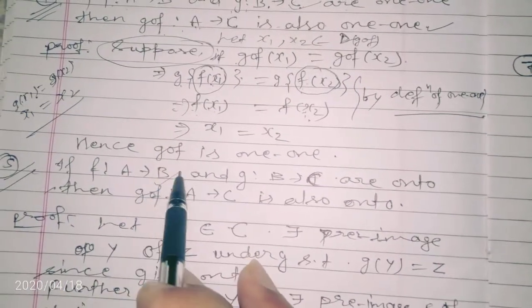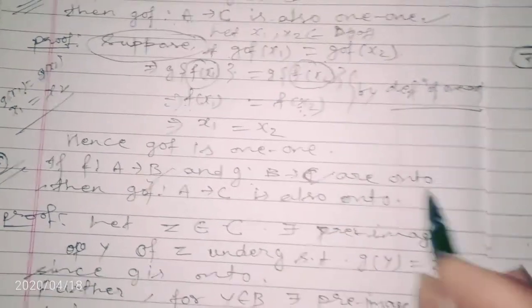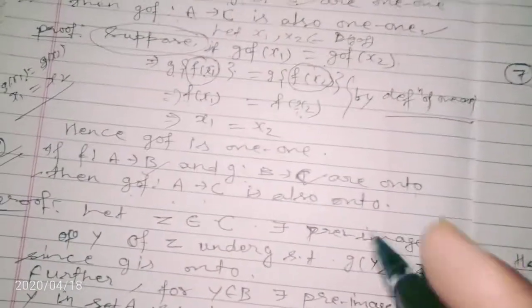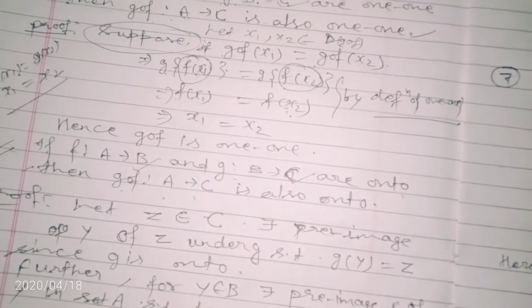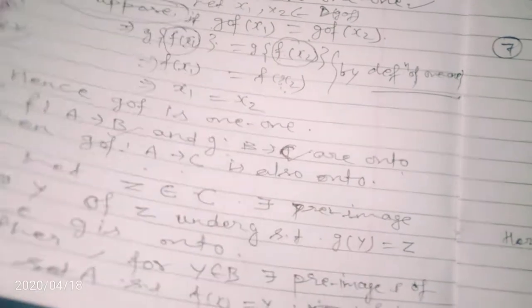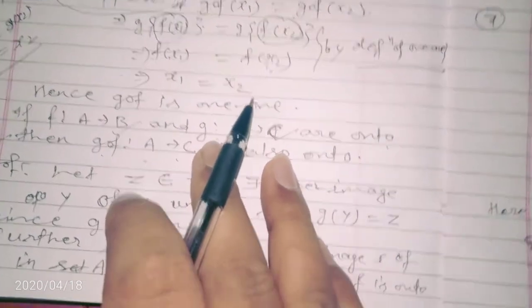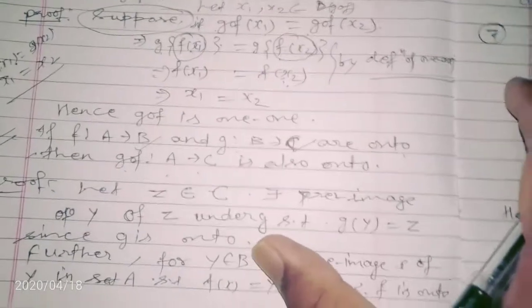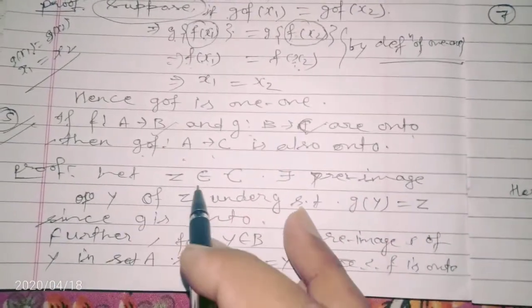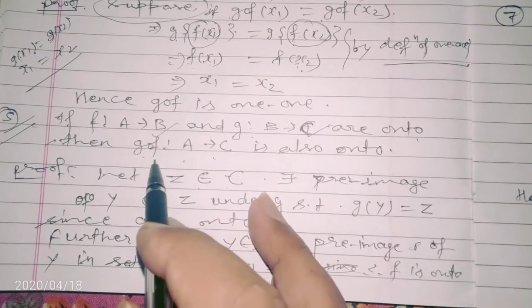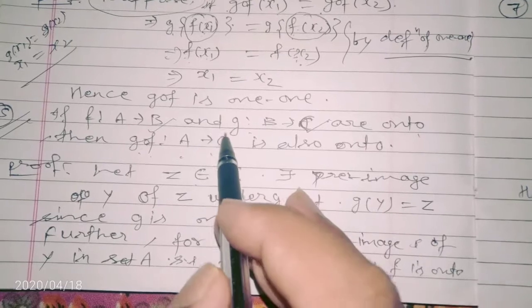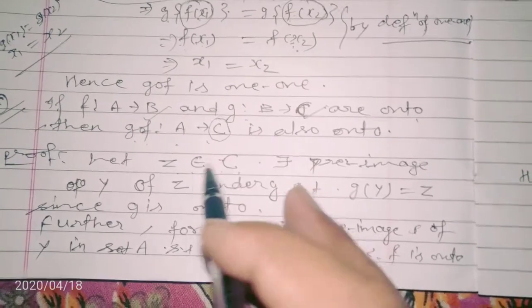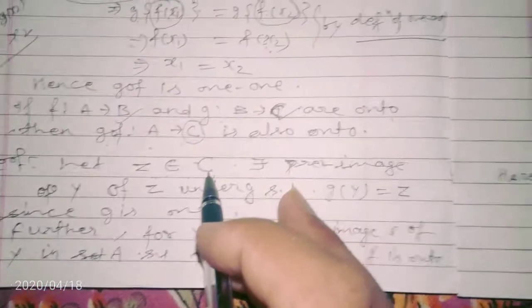The fifth property: if f is defined from A to B and g is defined from B to C, and both are onto functions, then gof defined from A to C is also onto. Onto means for every element in the co-domain there exists a pre-image in the domain. Let z belong to C, since gof maps A to C.